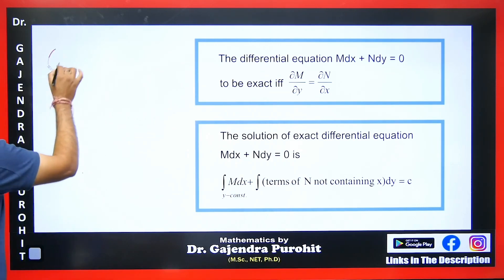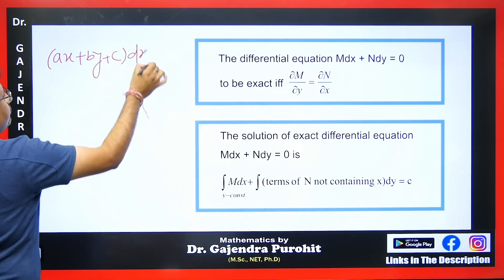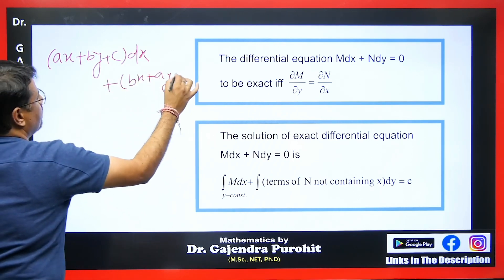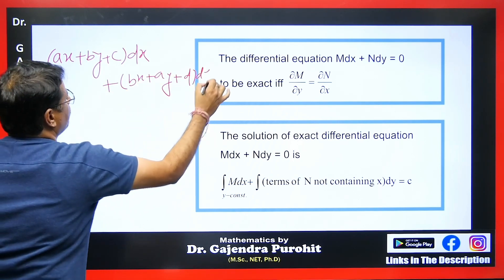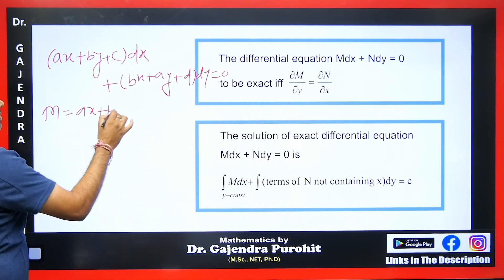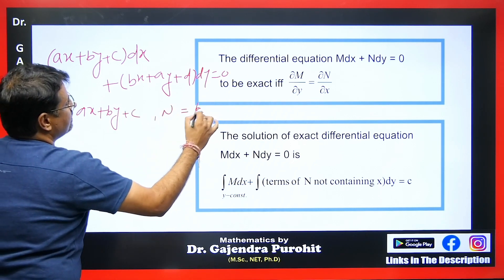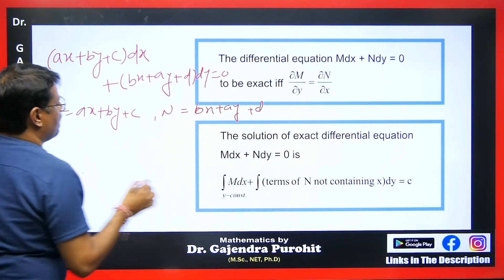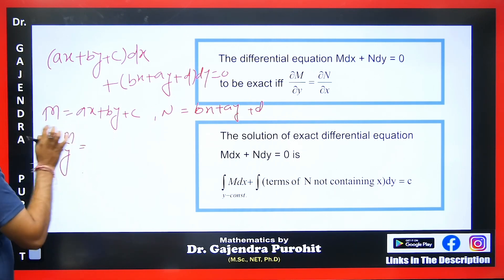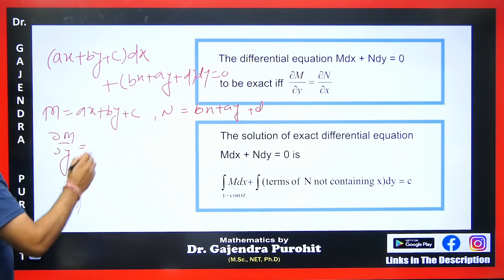For example, suppose we have a differential equation given as (ax + by + c)dx plus (bx + ay + d)dy equals 0. The value of M is ax + by + c and the value of N is bx + ay + d. We differentiate and check del M by del y — since this is a partial derivative, we differentiate with respect to y, and we get b.